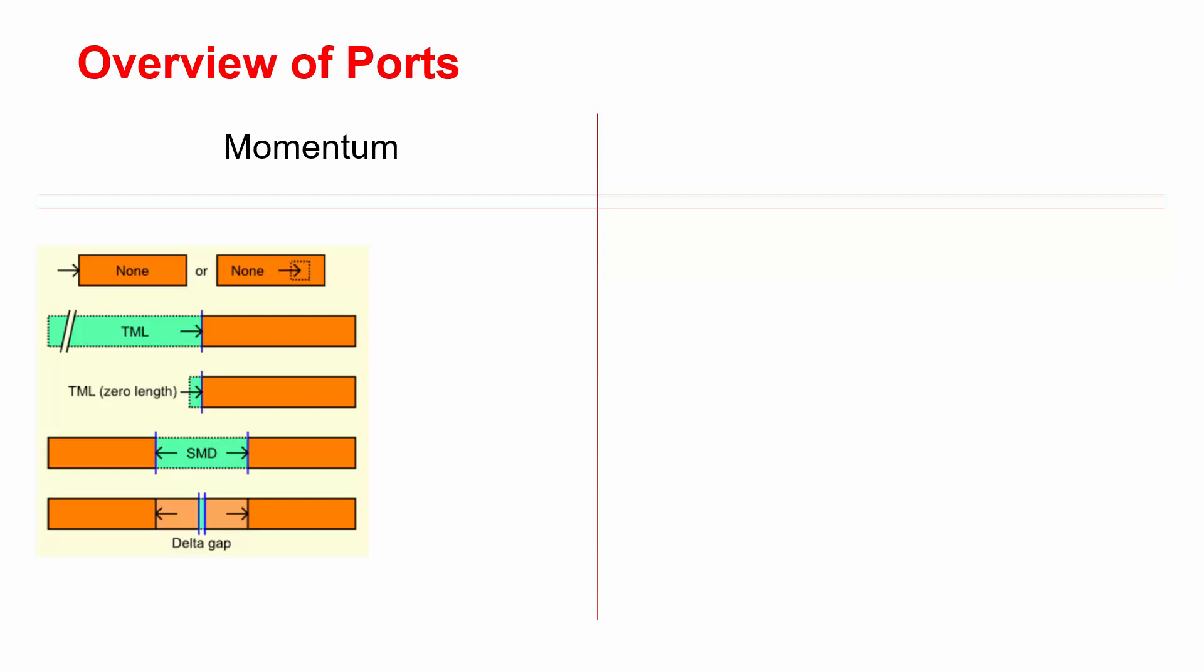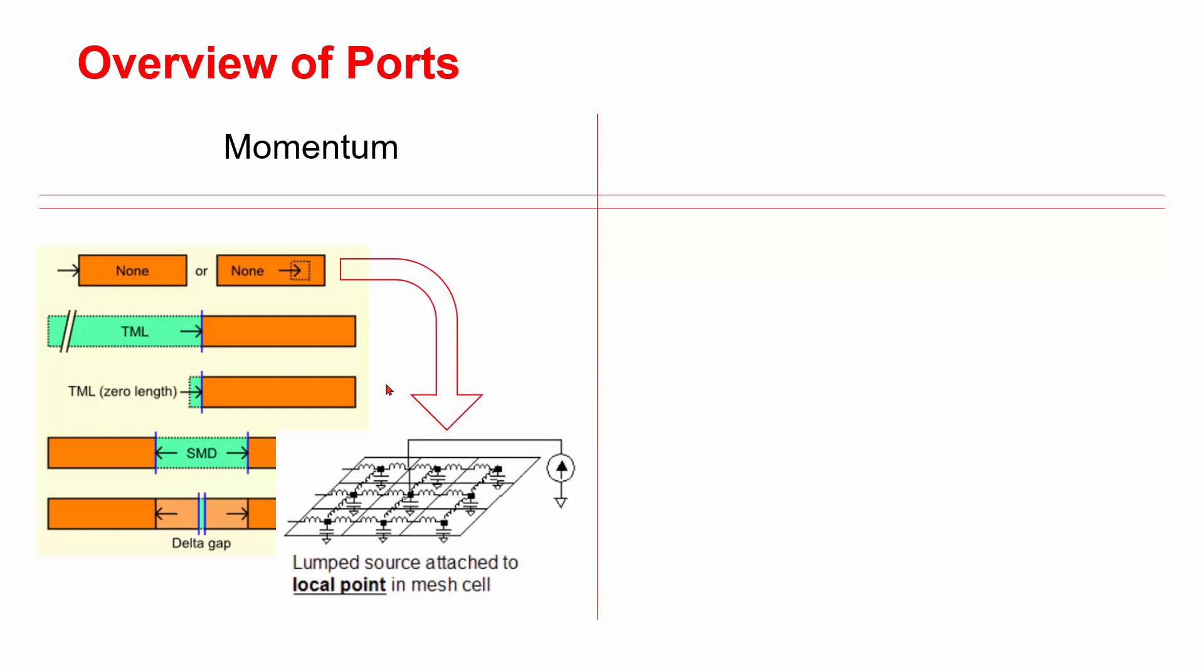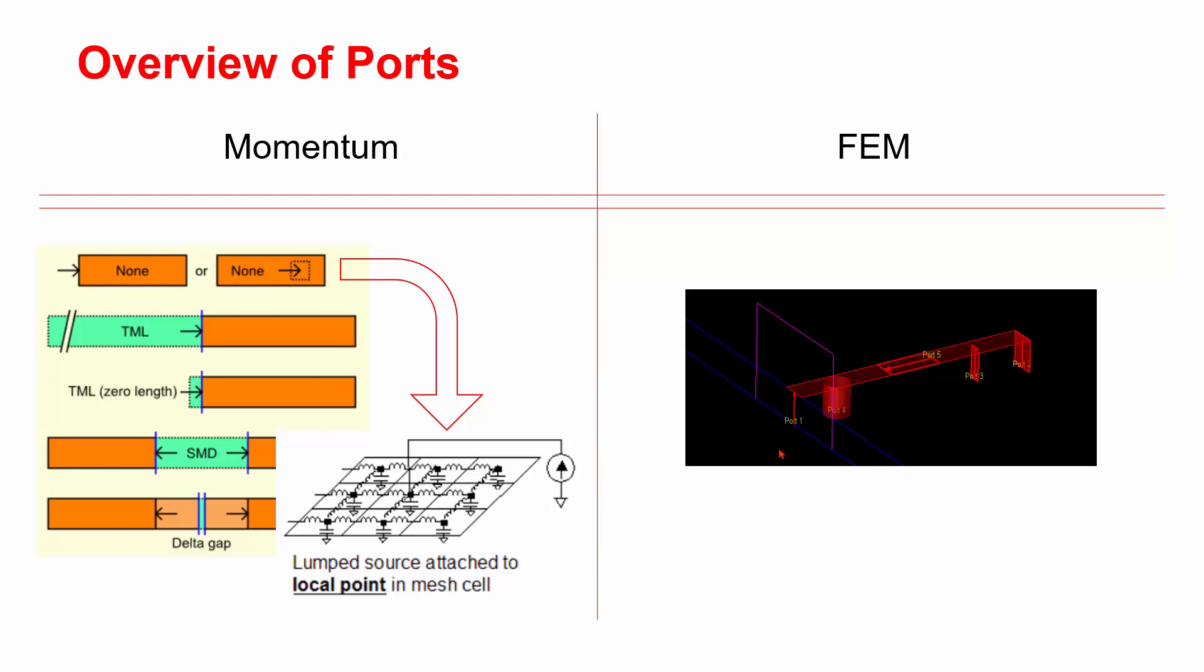This image shows you all of the port types. As you can see, in Momentum, it has planar ports with direct source or with virtual extended lines marked in green color. As a counterpart, in FEM, all of the ports are physical.